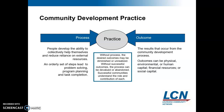In the process, people develop the ability to collectively help themselves and reduce reliance on external resources. An orderly set of steps leads to problem solving, program planning, and task completion. The results that occur from the community development process — outcomes — can be physical, environmental, or human capital, financial resources, or social resource capital.